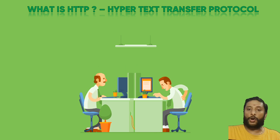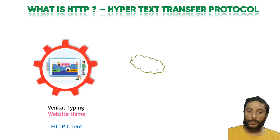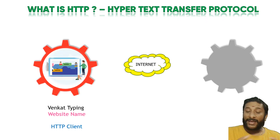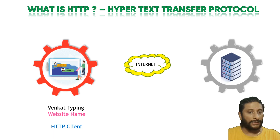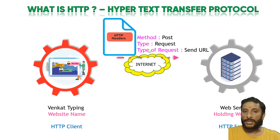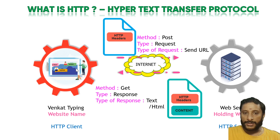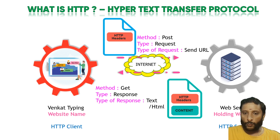Now let's talk about HTTP. Transferring a web page — hypertext — is done by the Hypertext Transfer Protocol. Here I have an HTTP client, and via the internet I'm trying to access a server — for example, gmail.com. I type the URL, the method is POST, and I send a request. The server automatically responds with content — HTML or a text document. So the request goes to the server and you get the Gmail page back as a response.